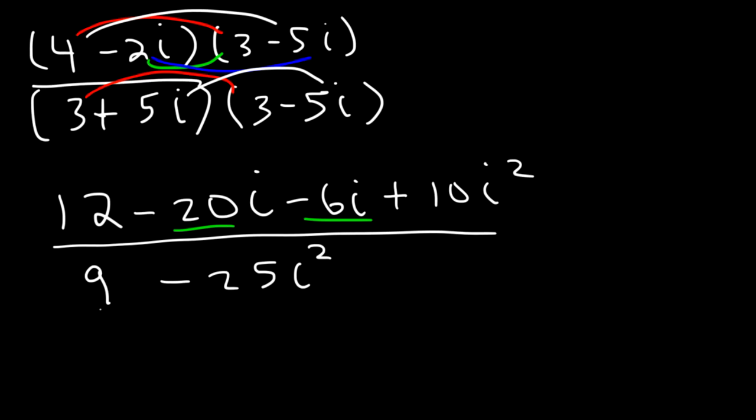So in the numerator, let's combine the like terms. So it's 12 minus 26i, and 10i squared is negative 10. Negative 25i squared, that's going to be positive 25. 12 minus 10 is 2. 9 plus 25 is 34.